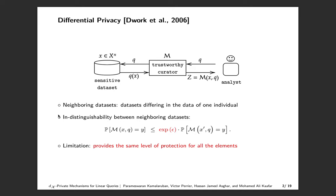The neighboring datasets are the ones that differ in one row, or in the data of one individual. The privacy mechanism outputs a randomized response to the query by injecting carefully calibrated noise to the true answer. Formally, a mechanism emits epsilon differential privacy if for all neighboring datasets X and X' and for any query Q, the randomized responses vary only by a multiplicative factor of the exponential of epsilon. Here, epsilon is called the global privacy budget.